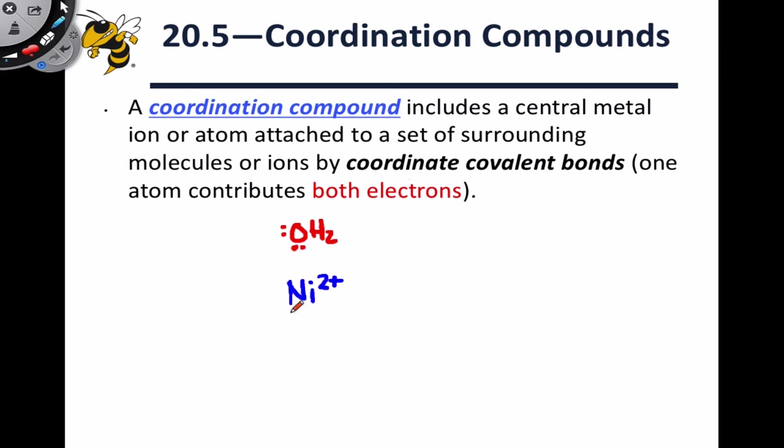...such as Ni2+, surrounded by a set of molecules or ions that are bonded to the central metal atom through what are called coordinate covalent bonds. What's unique about a coordinate covalent bond is that both electrons of the covalent bond are donated by the same atom.